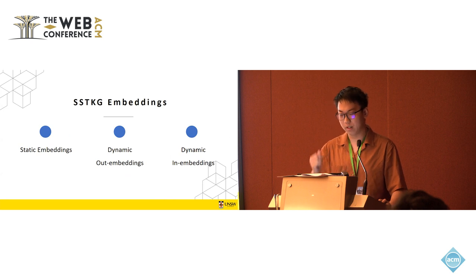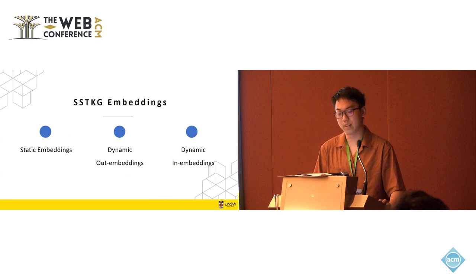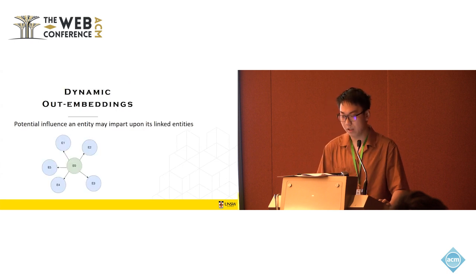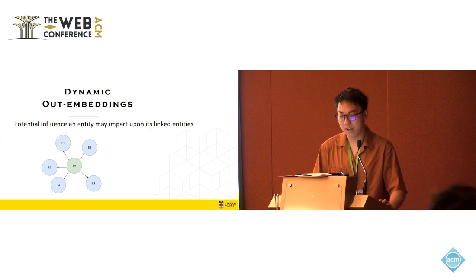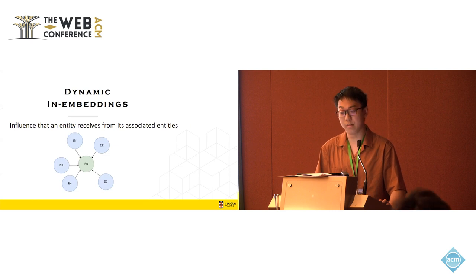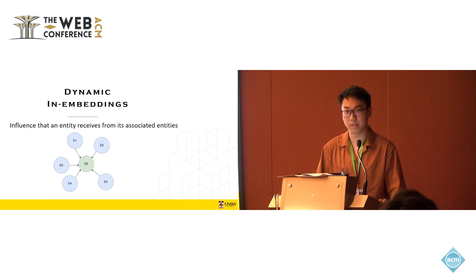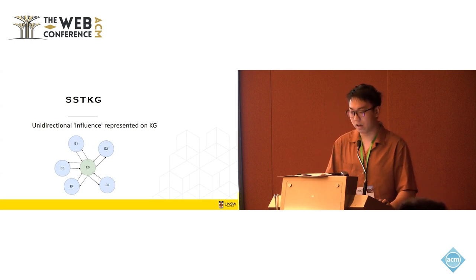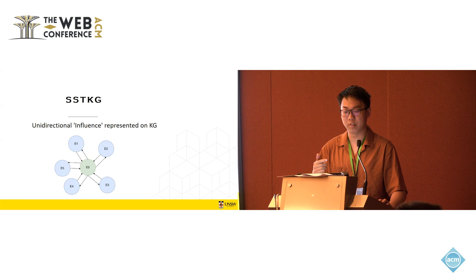So here for our framework, the spatial temporal knowledge graph embeddings. There are three parts of the embeddings. The first one is the static embedding, which is unchanged over time and seen as ground-truths, for example, the entity's overall record. The second is the dynamic out embedding, which represents, at time t, how potential influence an entity may be applied to its linked entities. And the third one is dynamic in-embeddings, which is influence that an entity receives from its associated entities. So at last, for one simple spatial temporal knowledge graph, between different entities, a unidirectional influence can be represented.